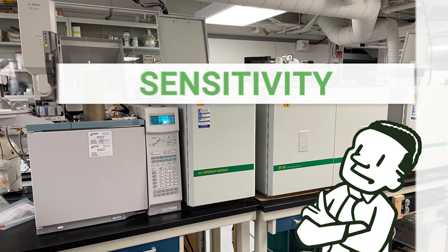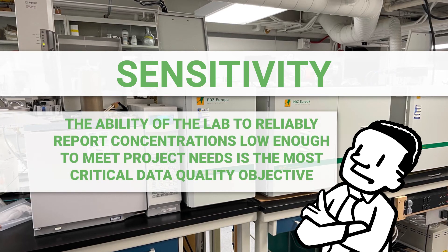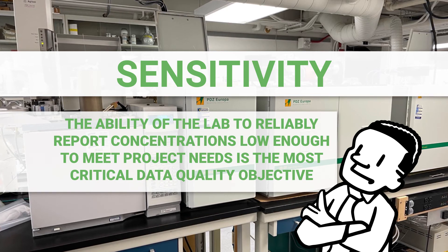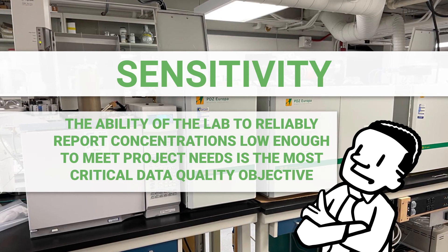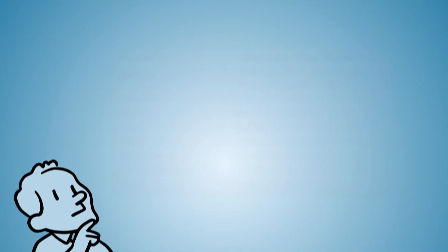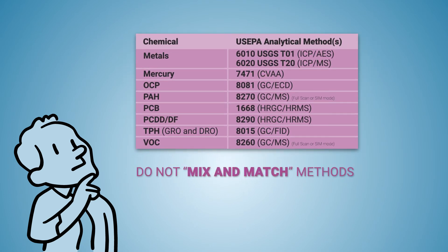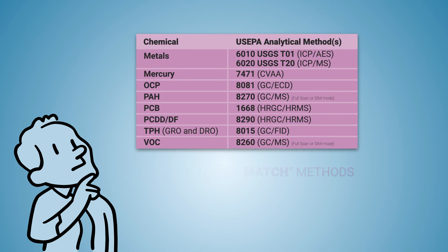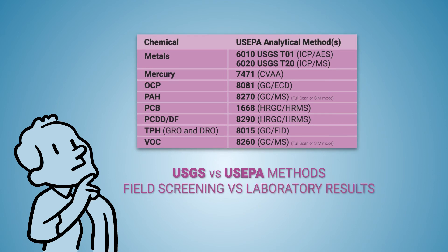For most projects, sensitivity — that is, the ability of the lab to reliably report concentrations low enough to meet project needs — is the most critical data quality objective. Sensitivity can be especially important in background samples, which may have lower concentrations than site samples. A large percentage of non-detects in a background dataset may not support important evaluations such as the derivation of background threshold values. Analytical test methods used in the background study should provide substantively equivalent results to the laboratory method used at the investigative site. It is important not to mix and match methods by using a different approach for background. Examples include using USGS versus US EPA metal test methods, which use different acids for digestion, or using field screening results and laboratory results in the same dataset.